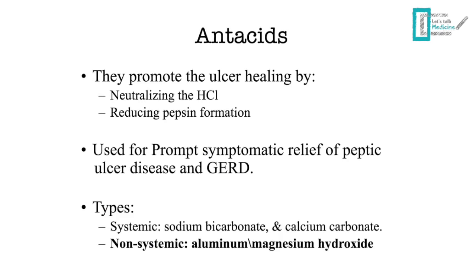The first class is antacids. The most important thing to know is that antacids are used only for prompt symptomatic relief in peptic ulcer disease or gastroesophageal reflux disease — this is really important for exam questions. The mechanism is neutralizing HCl and reducing pepsin formation.